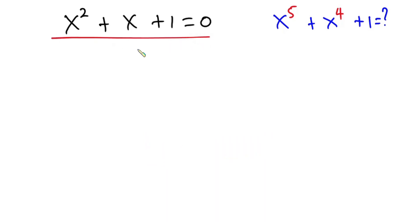From this equation, let's divide everybody by x. So we have x to the second power over x plus x over x plus 1 over x is equal to 0 over x. Now if we simplify this, we have x plus 1 plus 1 over x and this is equal to 0.